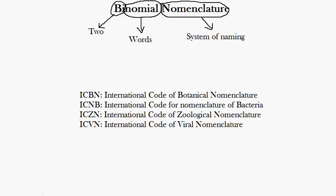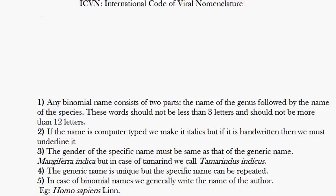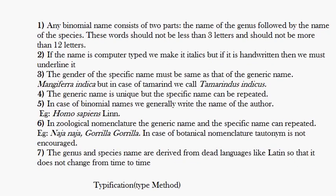Now let us talk about the rules. First, any binomial name consists of two parts: the name of the genus followed by the name of the species. These words should not be less than 3 letters and should not be more than 12 letters.